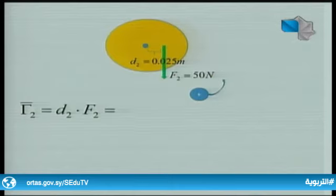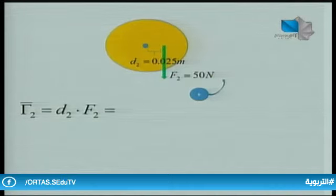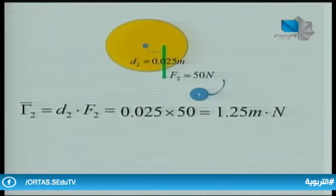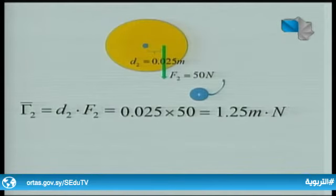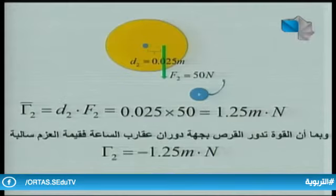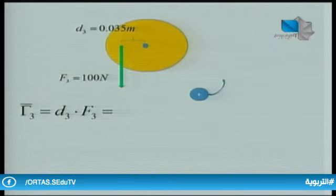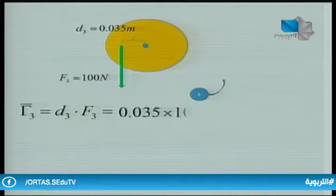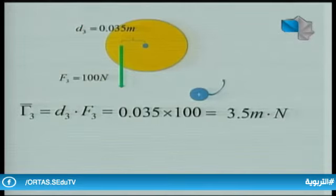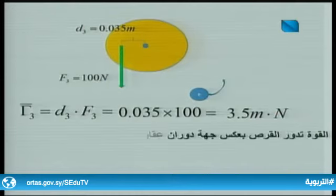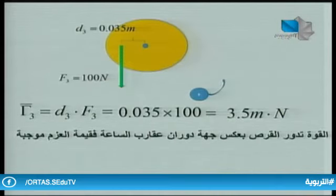لحساب عزم القوة الثانية F2 نطبق: م2 = D2 × F2 = 0.025 × 50 = 1.25 متر·نيوتن، وهو سالب أيضاً لأن F2 تحرك الجسم بعكس الاتجاه الموجب. أما القوة F3 فعزمها: م3 = D3 × F3 = 0.035 × 100 = 3.5 متر·نيوتن، وهو موجب لأنها تحرك الجسم مع الاتجاه الموجب أي بعكس عقارب الساعة.